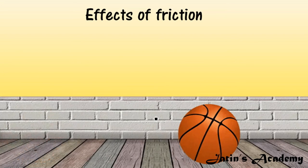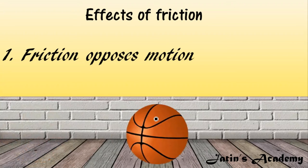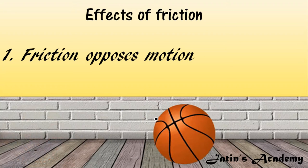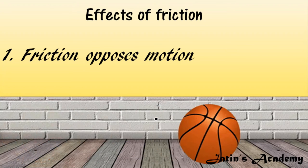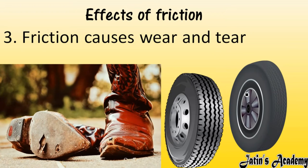Next we have the effects of friction. First effect: friction always opposes motion — it always slows down the motion of an object through interlocking between the two surfaces. Second effect: friction always produces heat. For example, when you rub your two hands together, friction produces heat. In machinery parts, when parts rub against each other, they also heat up due to friction.